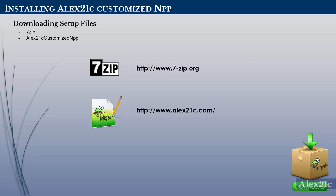I have compressed my uncustomized version of Notepad++ using a utility called 7-Zip. So in order to extract the files from the archive, you need to have 7-Zip installed. Let us download both the softwares from the official websites.